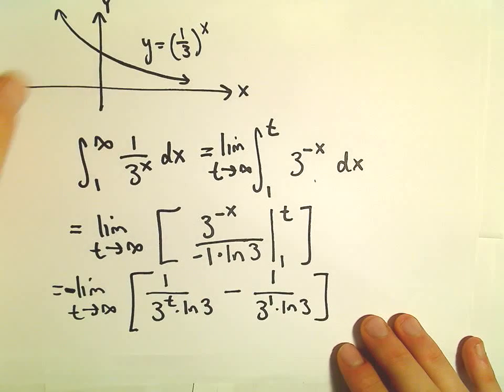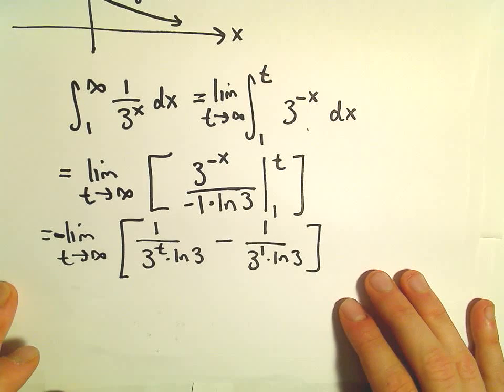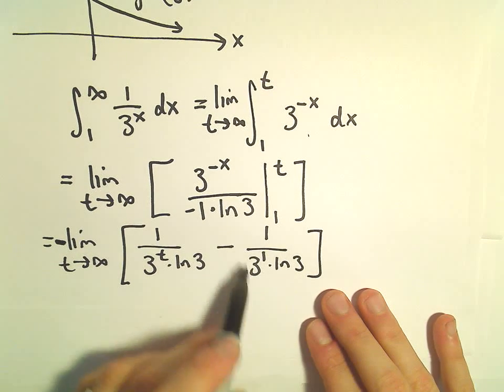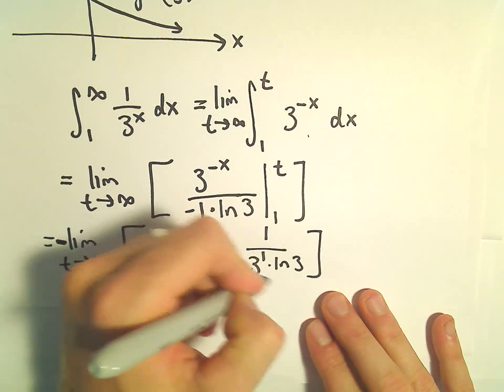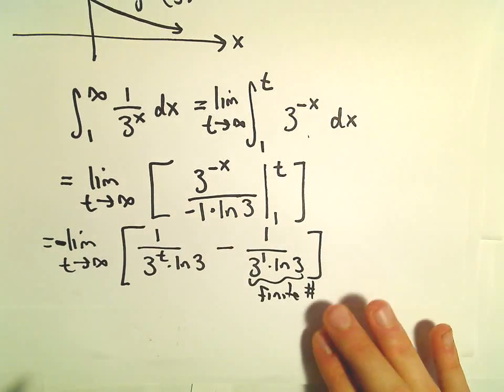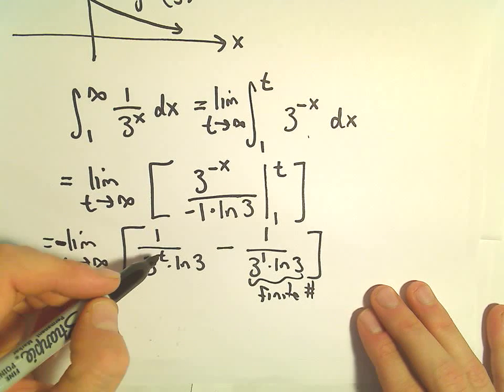The only thing I'm really interested in is whether this is a convergent or divergent improper integral. Well, 1 over 3 times ln of 3, this is definitely some finite number, so no problem there. The only thing I'm thinking about is what happens with the limit. Well, as t goes to infinity,